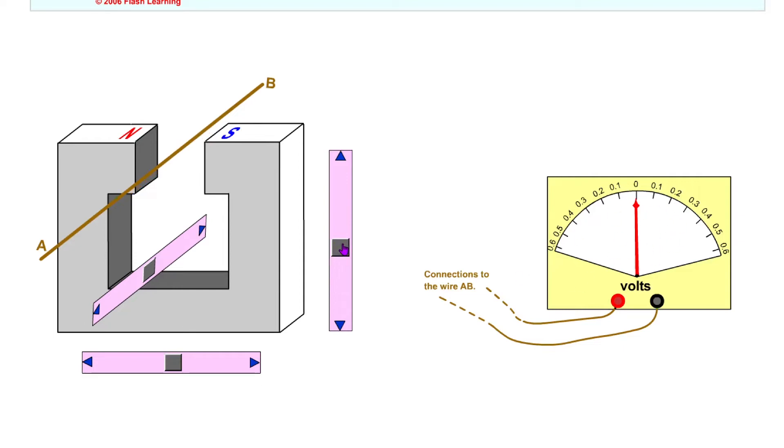However, if I take the wire and I move it perpendicular to the magnetic field up and down, you'll notice we get a non-zero value on the voltmeter, i.e. we're getting a voltage or EMF generated here.